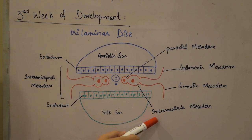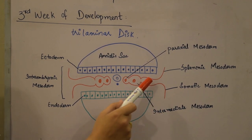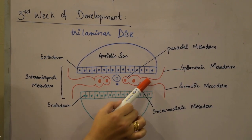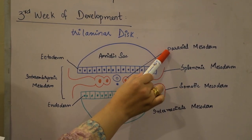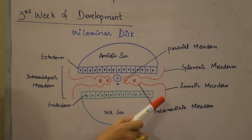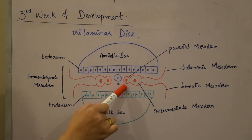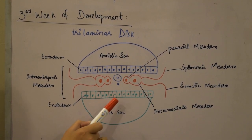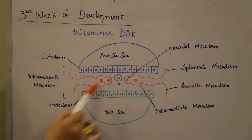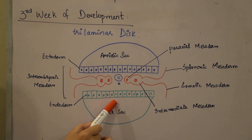The intermediate mesoderm is responsible for formation of the kidneys and gonads. The lateral plate mesoderm is further divided into splanchnic and somatic mesoderm — the splanchnic mesoderm goes upward and the somatic mesoderm goes downward. The endoderm lies underneath the intra-embryonic mesoderm and is very important for development of the epithelial lining of the GI system, the accessory organs, and the glands.